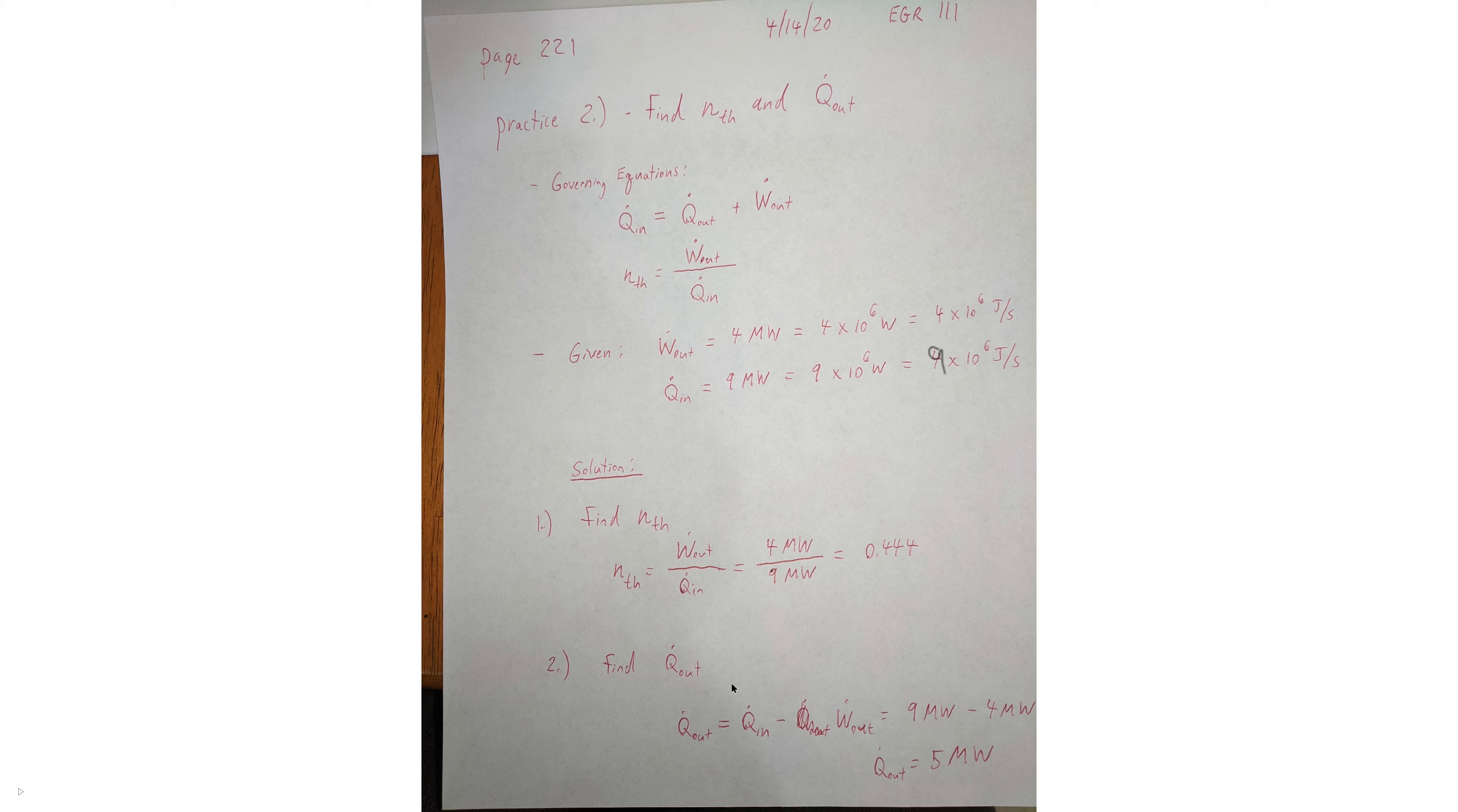Next, we need to find the rate at which heat is being dumped into the low temperature sink. Using our equation for heat engines following the first law of thermodynamics, it's the rate at which heat is coming in minus the rate at which work is being done. That gives us the rate at which thermal energy is being dumped into the low temperature sink. So it's 9 megawatts minus 4 megawatts, which equals 5 megawatts.